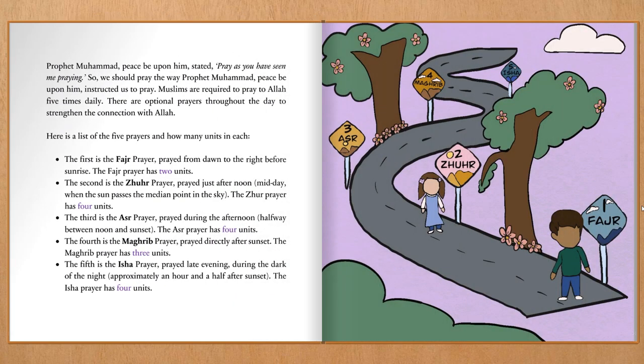Prophet Muhammad, peace be upon him, stated: "Pray as you have seen me praying." So we should pray the way Prophet Muhammad, peace be upon him, instructed us to pray. Muslims are required to pray to Allah five times daily. There are optional prayers throughout the day to strengthen the connection with Allah.